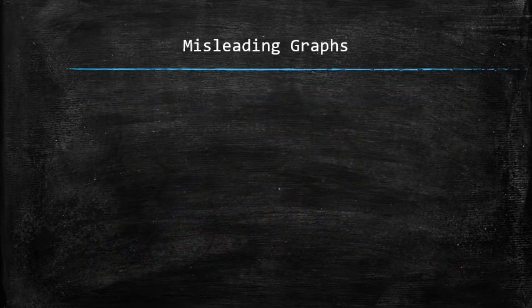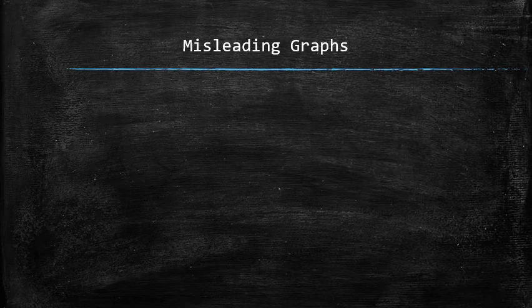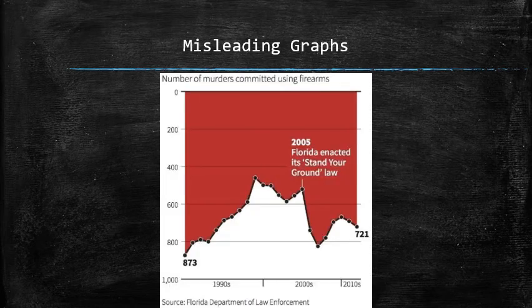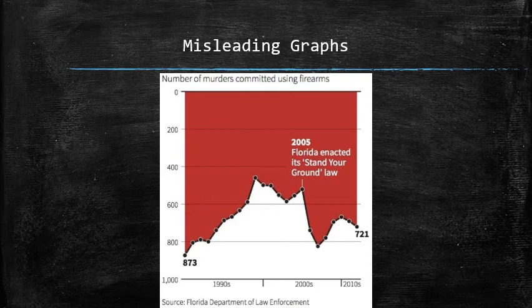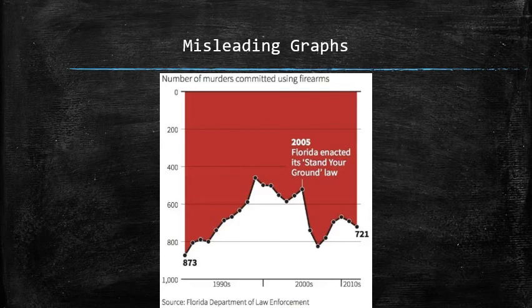However, sometimes the visual summary misrepresents the data with deliberate intent, as in the next case. How do you think the number of murders committed using firearms changed after Florida enacted its Stand Your Ground law? It appears that the number went down. However, look at the flipped vertical axis.